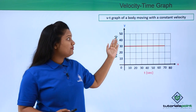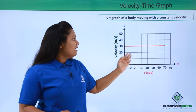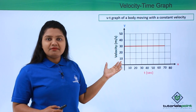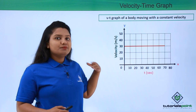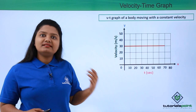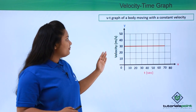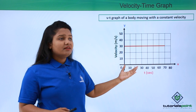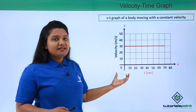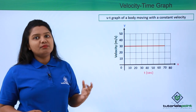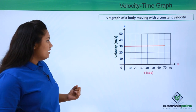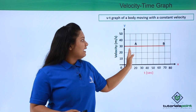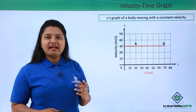Now let us say we have a velocity time graph which is parallel to the x-axis. We already know that such a velocity time graph represents a body moving with a constant or uniform velocity with zero acceleration. If we want to find the acceleration, we already know it is zero from the graph, but let us verify this using the formula we just discussed. Let us take two points A and B and find the acceleration between them.